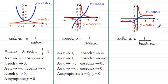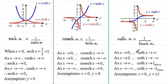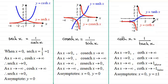In summary for y equals coth x: as x tends to zero from the positive side, coth x tends to infinity; from the negative side, coth x tends to minus infinity. As x tends to infinity, coth x tends to one from above; as x tends to minus infinity, coth x tends to minus one from below. The asymptotes are the y axis (x equals zero) and the lines y equals one and y equals minus one. I hope that's given you some idea of how to draw y equals sech x, cosech x, and coth x, based on the graphs of y equals cosh x, sinh x, and tanh x.